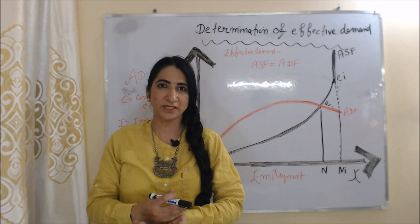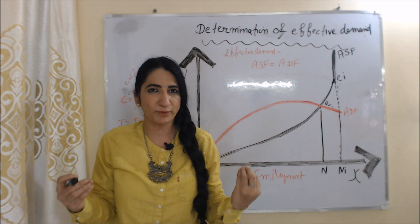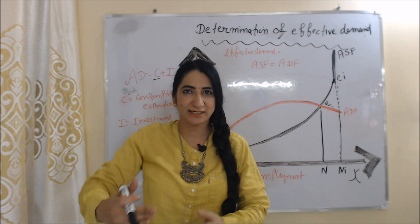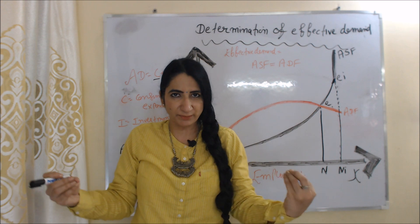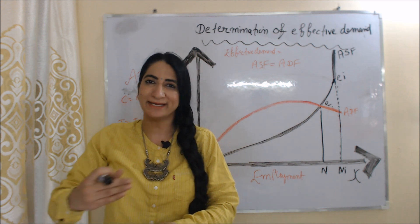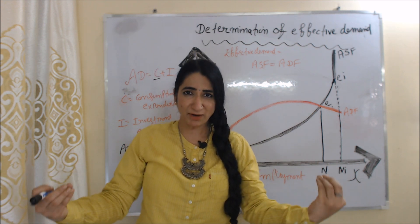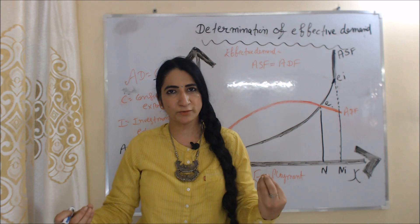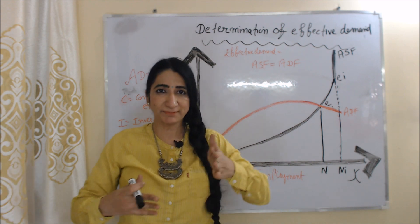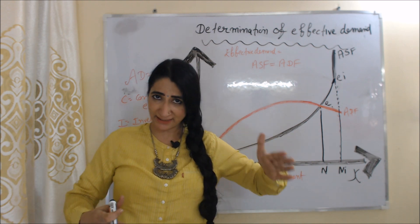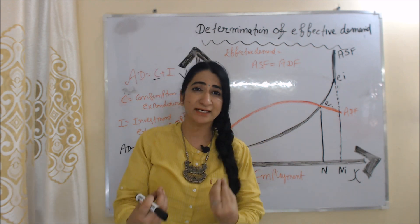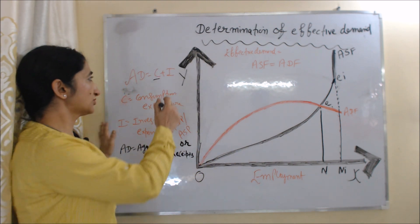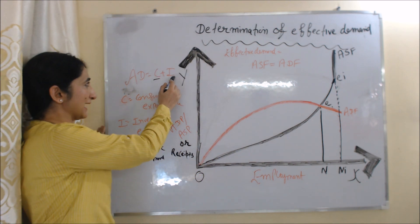According to this theory, the cause of unemployment is a fall in aggregate demand. Because when aggregate demand falls, output falls, and employment for output also falls. So by increasing aggregate demand, we can increase output and employment.